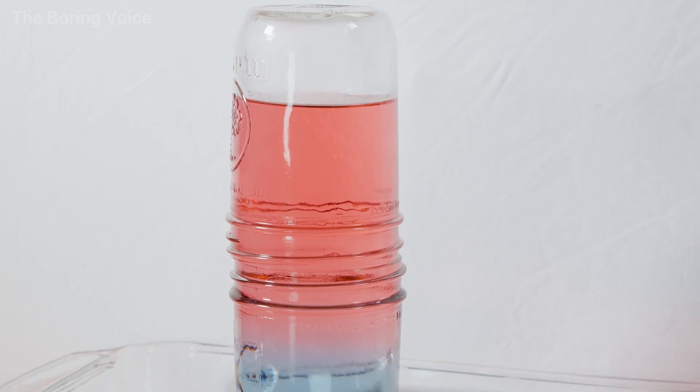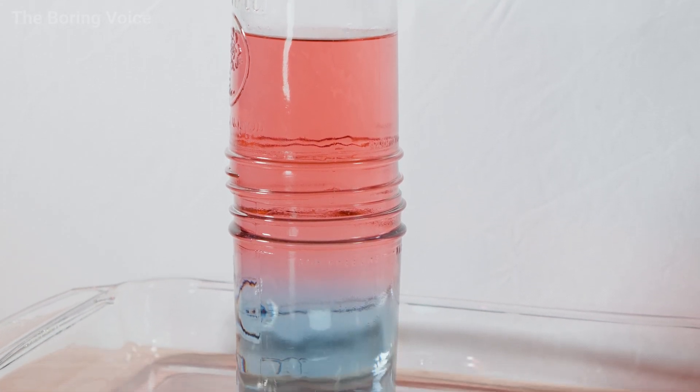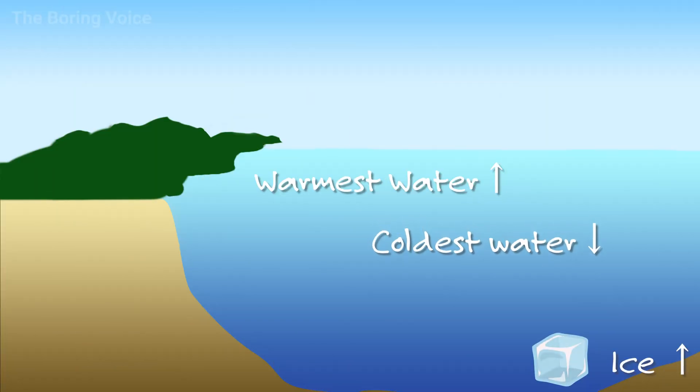This is also why a swimming pool will feel colder on the deepest end of the pool. As water cools, it will sink to the bottom of the container, and the hot water will stay on top.